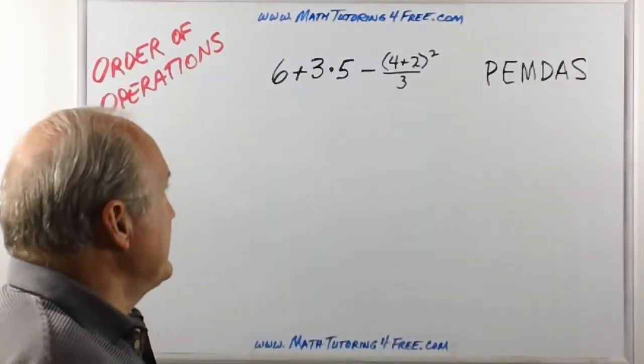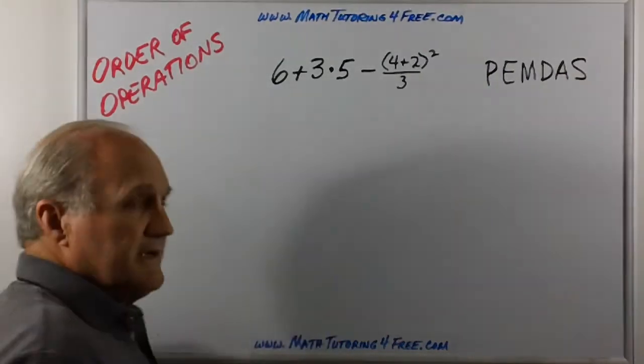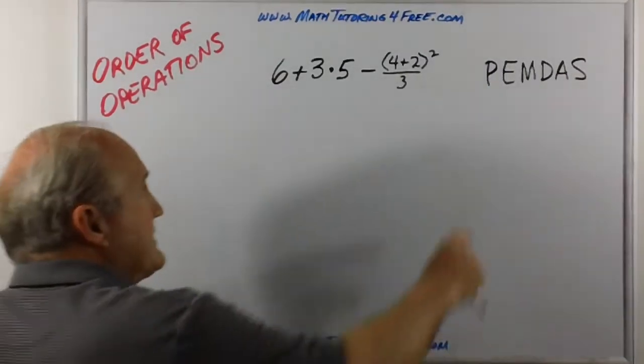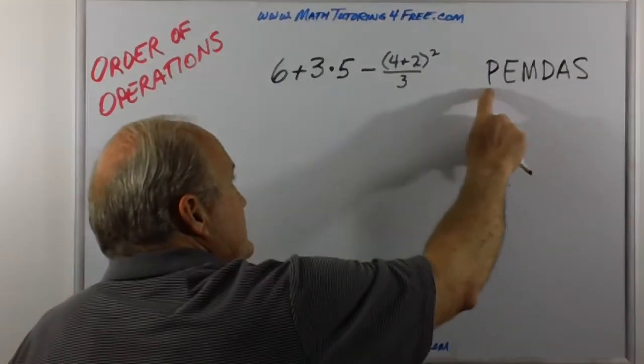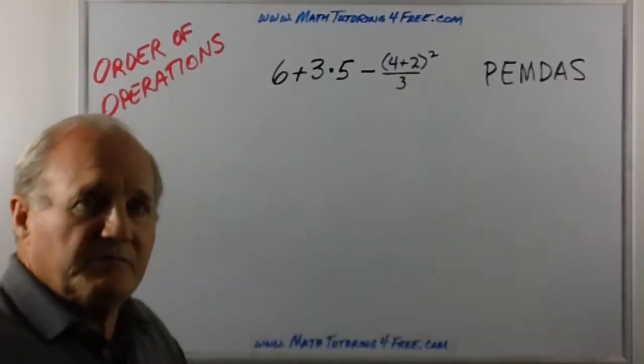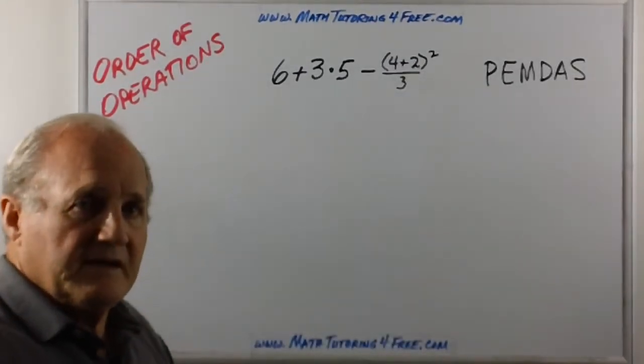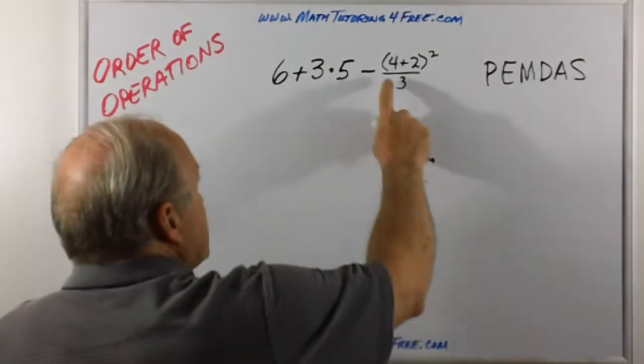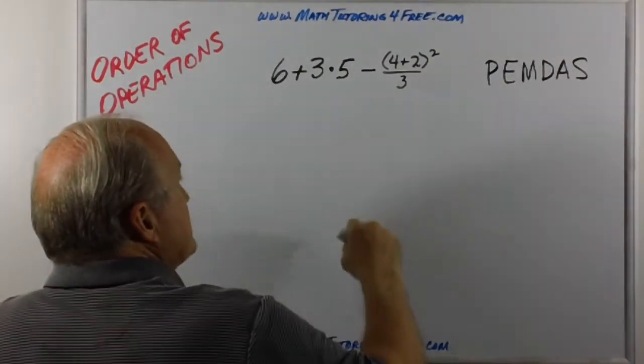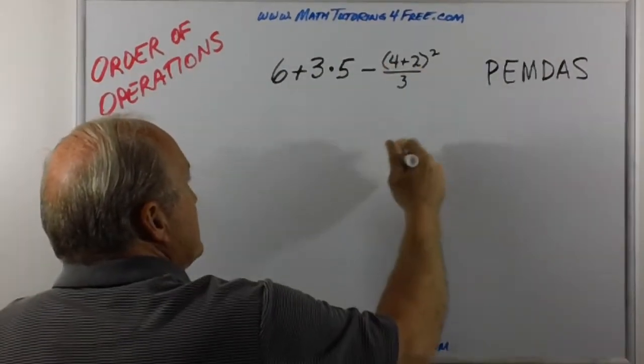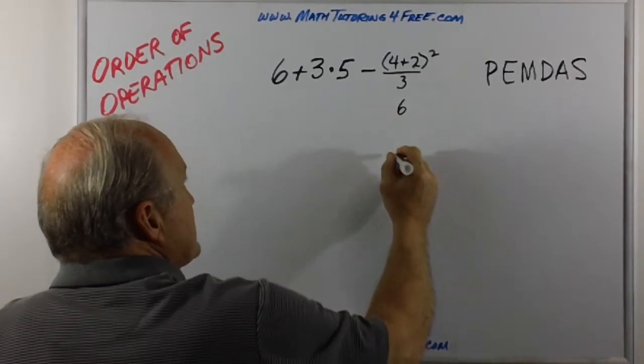Let's take this example that I've written on the board. It's got a little bit of everything in it. According to this order of operations, the first thing we want to look for is any parentheses. To get rid of the parentheses, in this case, within the parentheses it says four plus two. So we do that first, and that becomes six,